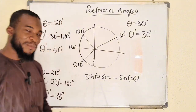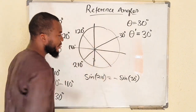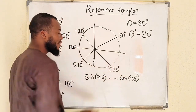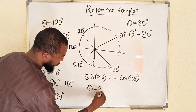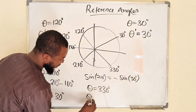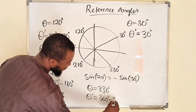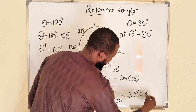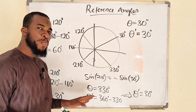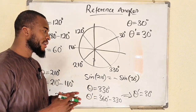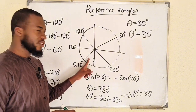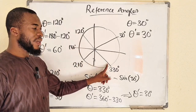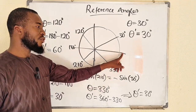Finding sine of 30 degrees is very simple. For quadrant four, we have 330 degrees as a special angle. So if theta equals 330 degrees, its reference angle will be 360 degrees minus 330 degrees, which gives us 30 degrees. To summarize: in quadrant three, subtract 180 from the angle; in quadrant two, subtract the angle from 180; in quadrant four, subtract the angle from 360.